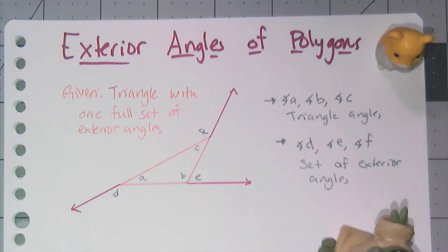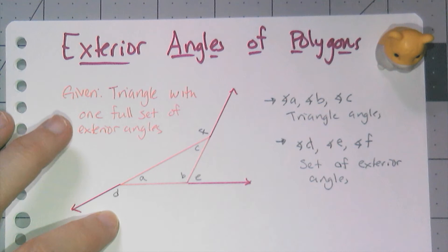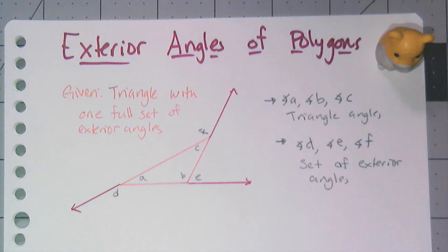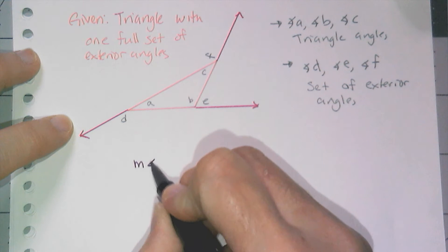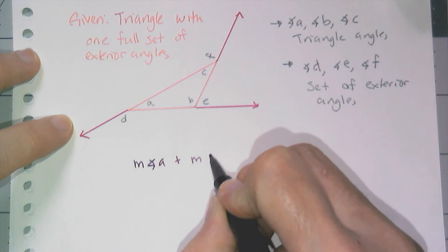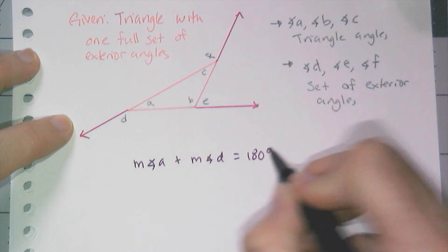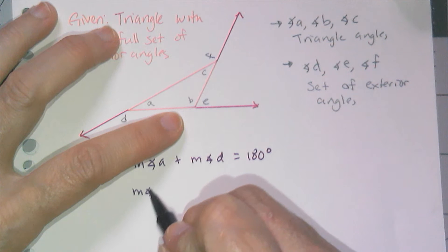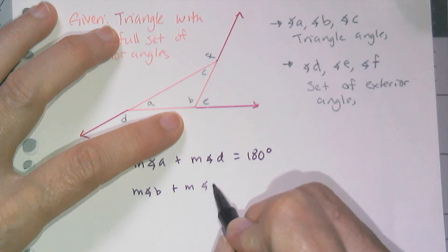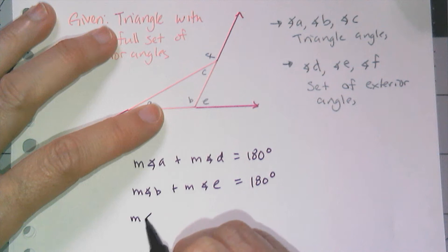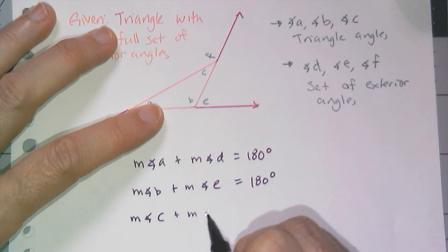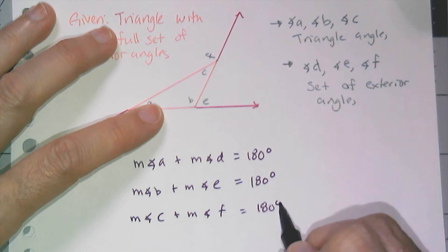And there's actually something kind of cool about the exterior angles, or one set of exterior angles. Now we know the individual exterior angles form linear pairs with the angle of the polygon. So I know that the measure of angle A plus the measure of angle D is going to equal 180 degrees. Similarly, I know the measure of angle B plus the measure of angle E is also going to equal 180 degrees. And I also know that the measure of angle C plus the measure of angle F is also equal to 180 degrees.